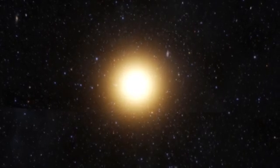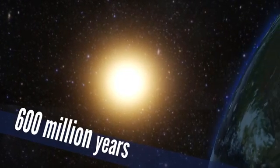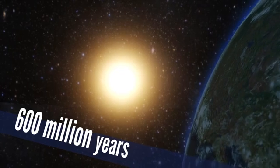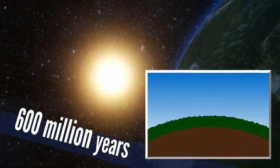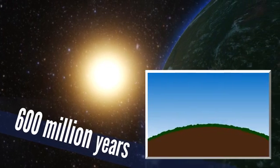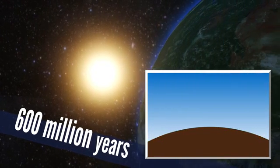As the sun gets older, it's getting hotter. 600 million years from now, our amped-up sun will cause more carbon dioxide to be trapped in Earth's crust, so much that photosynthesis becomes impossible for 99% of Earth's plants.